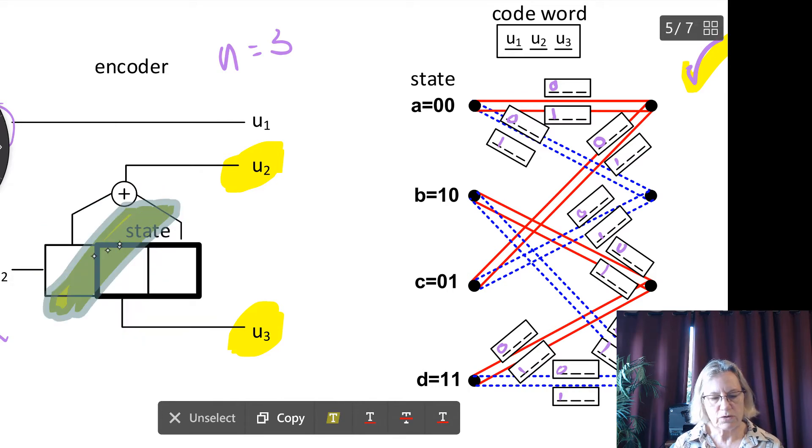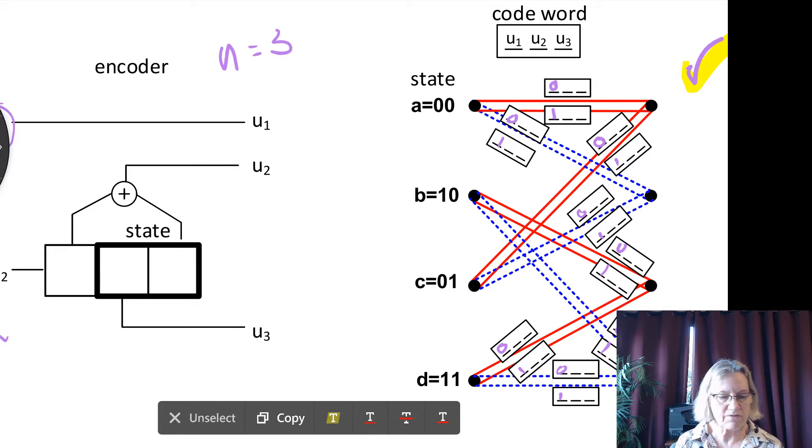So how are we going to do that? Well, we're going to go through and just start from state 0. So if I'm at state 0, what does that tell me? State A, I should say. If I'm at state A, that means that this is 0, 0.